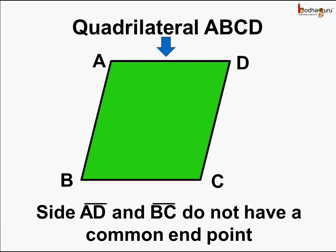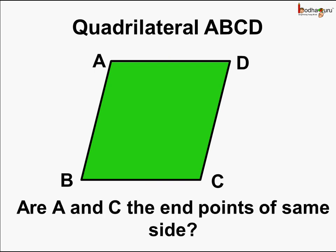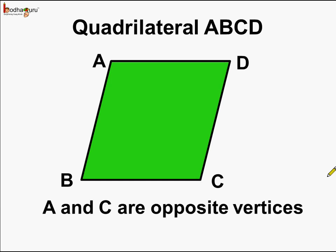Same way, side AD and side BC do not have a common end point. Hence, they are opposite sides. Now in this quadrilateral ABCD, vertex C and vertex A — are A and C the end points of the same side? No, they are not the end points of the same side. Such vertices are called opposite vertices. So we can say A and C are opposite vertices.